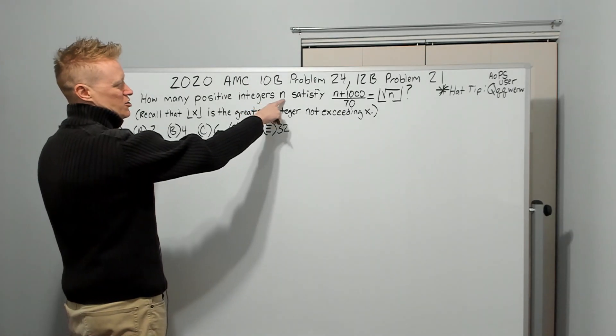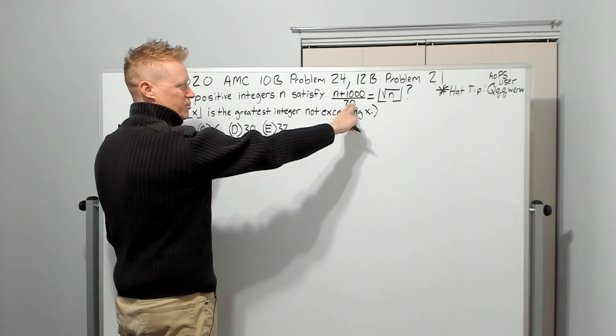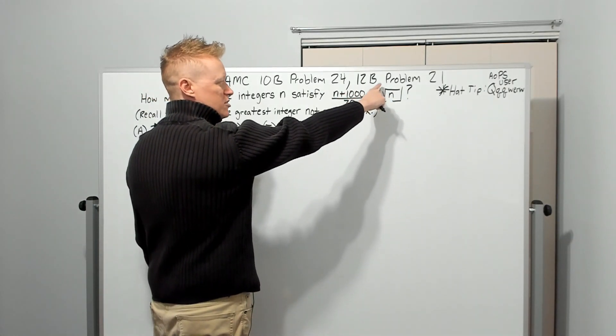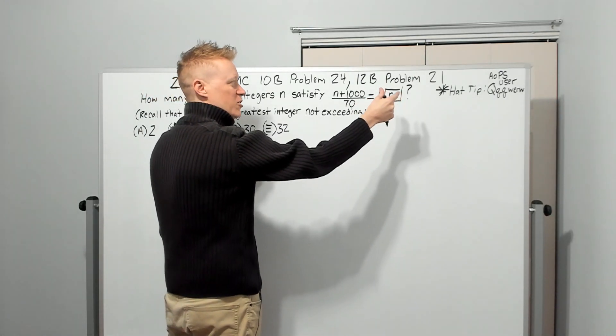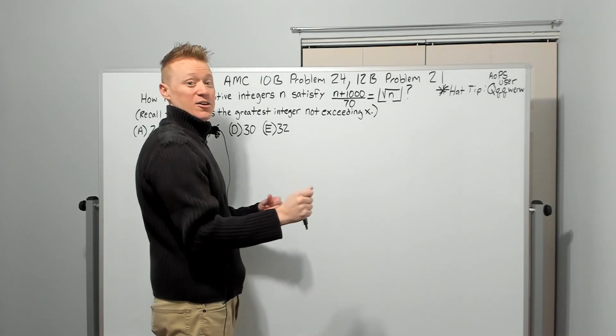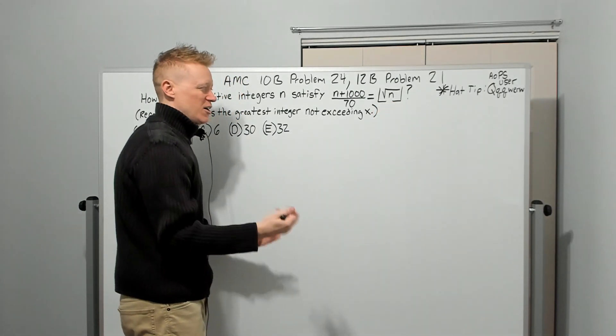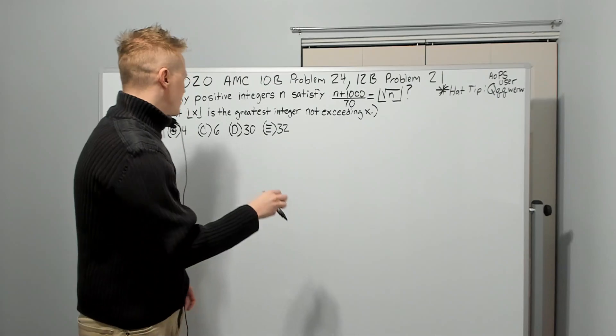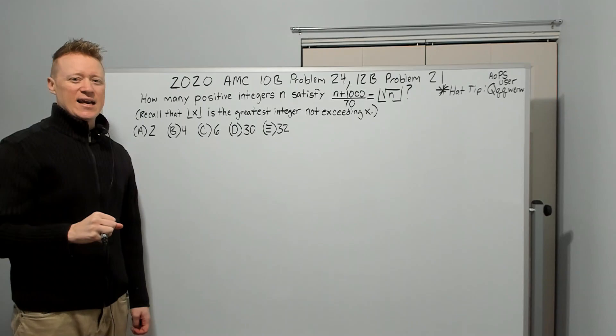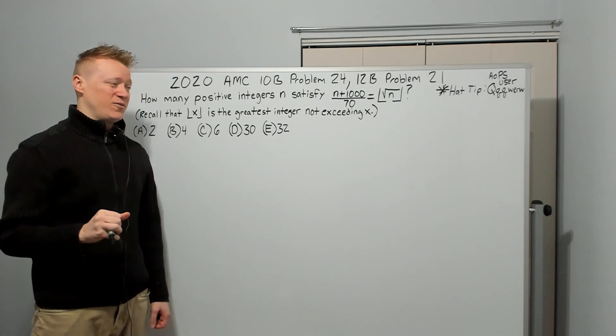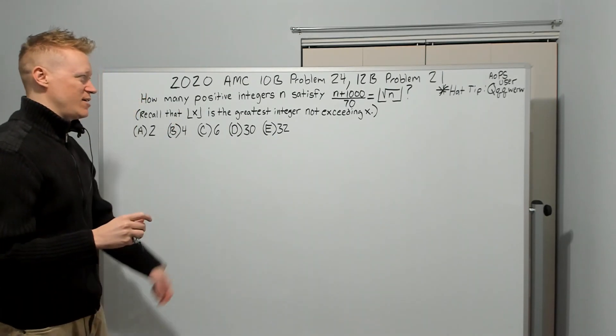How many positive integers N, okay? So N's an integer satisfy this expression where (N + 1000)/70 is equal to, this is weird. Now it's the square root of N and then the greatest integer less than or equal to that value. So rounded down, basically. It's just the floor function. You might call it that. It's also called greatest integer function. So even note it here for you, recall that this is the greatest integer not exceeding X. My thought is if you're answering question 24 on any AMC, you probably know that, but they did it because they're nice.